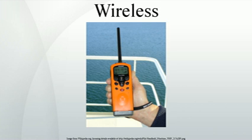Applications of wireless technology. Mobile telephones. One of the best known examples of wireless technology is the mobile phone, also known as a cellular phone, with more than 4.6 billion mobile cellular subscriptions worldwide as of the end of 2010. These wireless phones use radio waves to enable their users to make phone calls from many locations worldwide. They can be used within range of the mobile telephone site used to house the equipment required to transmit and receive the radio signals from these instruments.